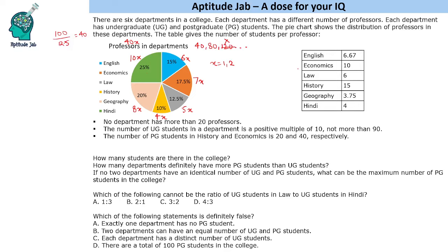The table gives the number of students per professor. Multiplying professors by students per professor for each department — in the same order: English, Economics, Law, History, Geography, and Hindi — gives totals of 40x, 70x, 30x, 60x, 30x, and 40x students respectively.